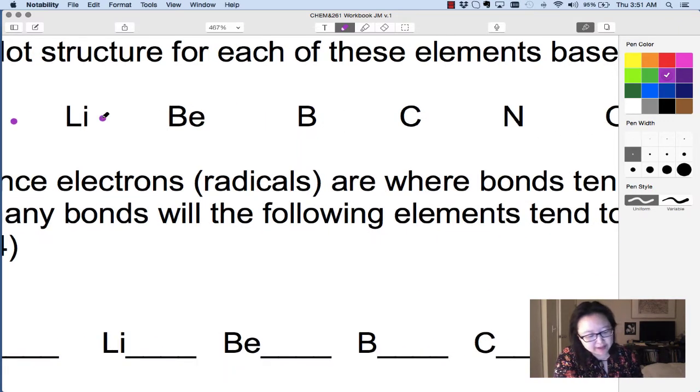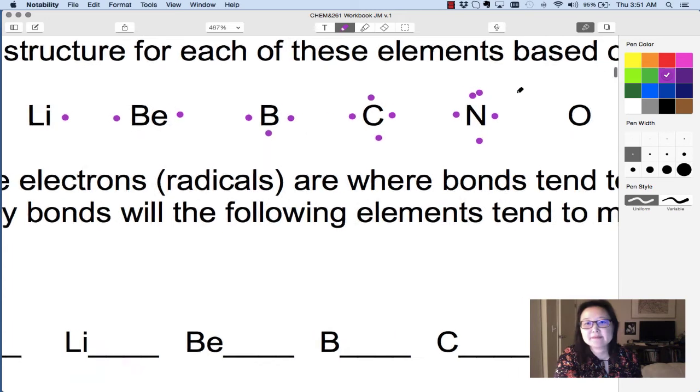Lithium is in group 1, beryllium is in group 2, boron is in group 3, carbon in 4. And then when you have more than 4, like nitrogen has 5, then you go back and you fill in another dot.